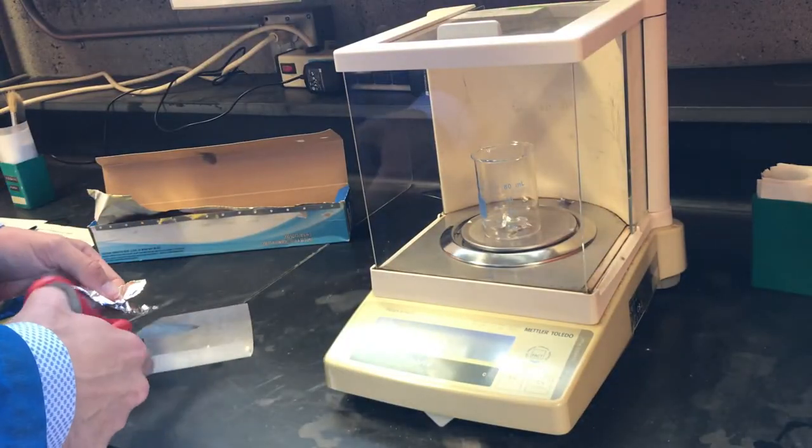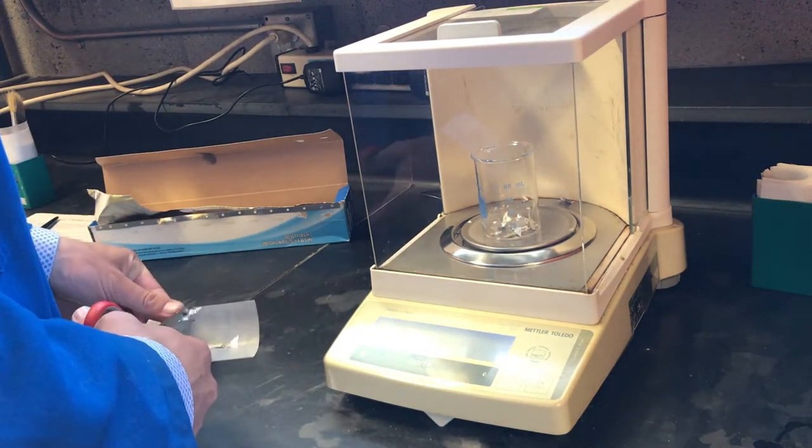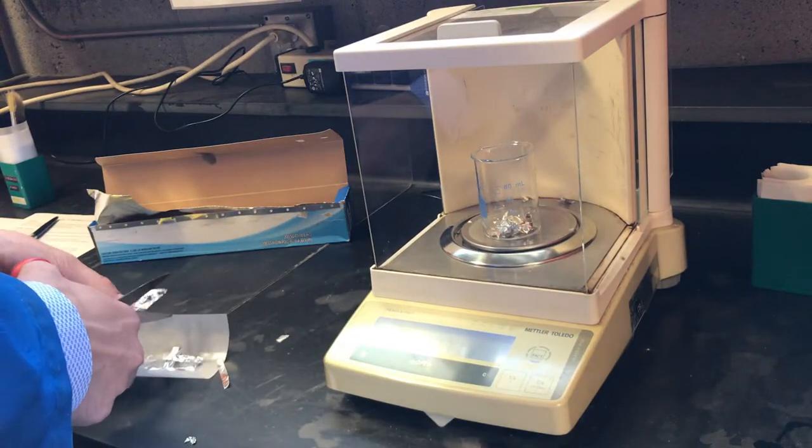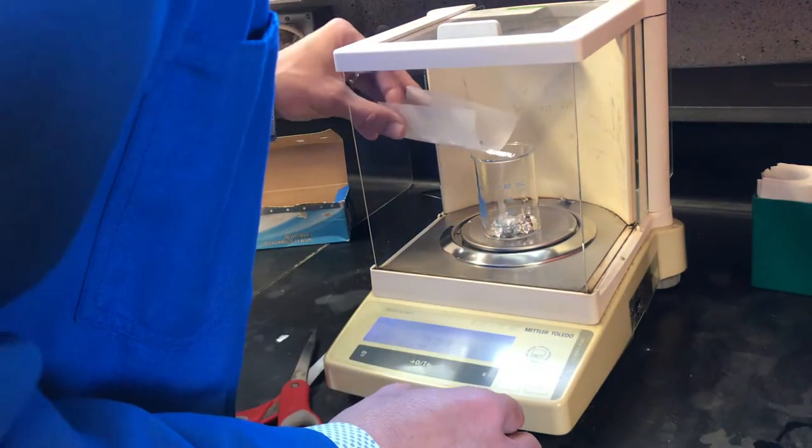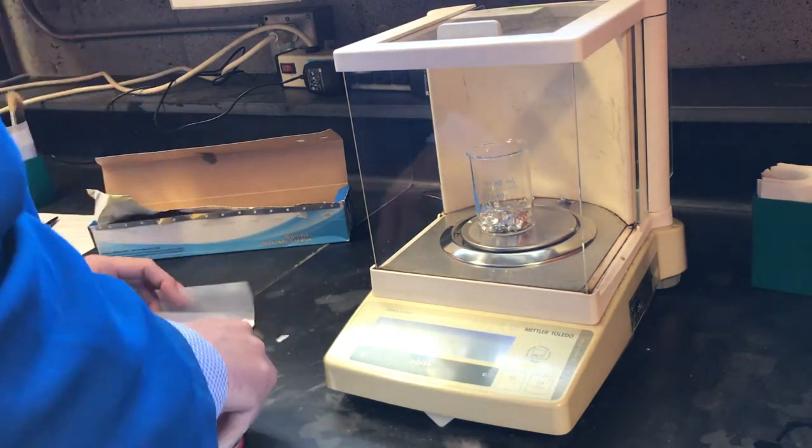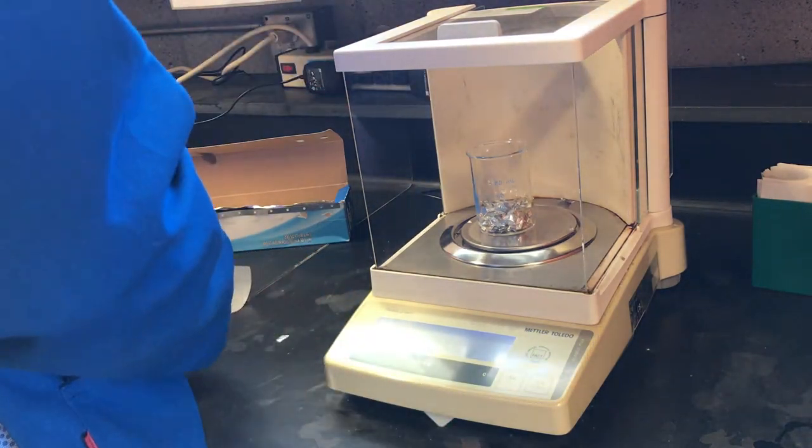We'll cut the foil to improve surface area to accelerate the next step in which we dissolve the aluminum metal. The starting mass of aluminum foil is 0.499 grams.